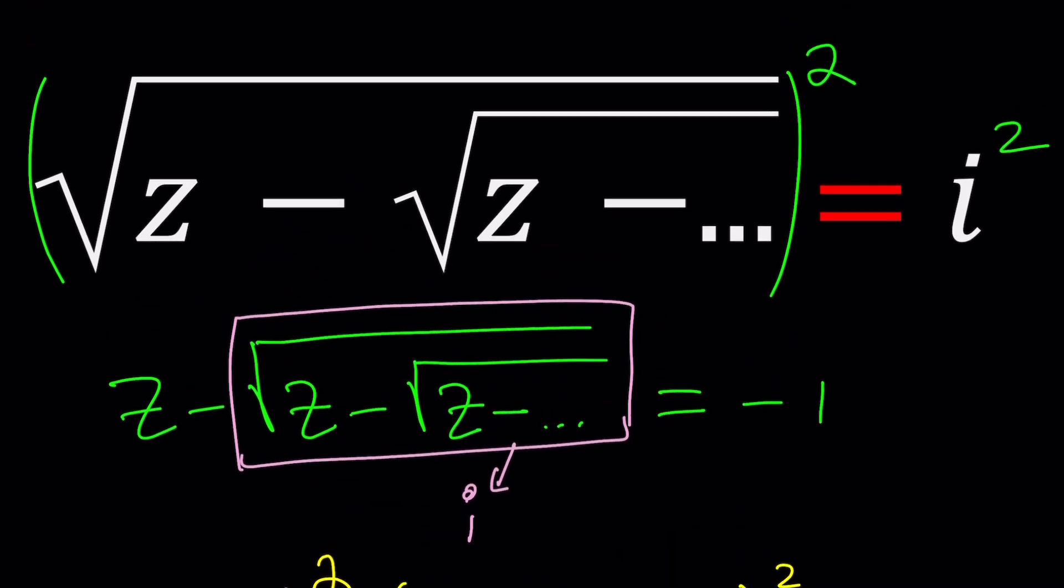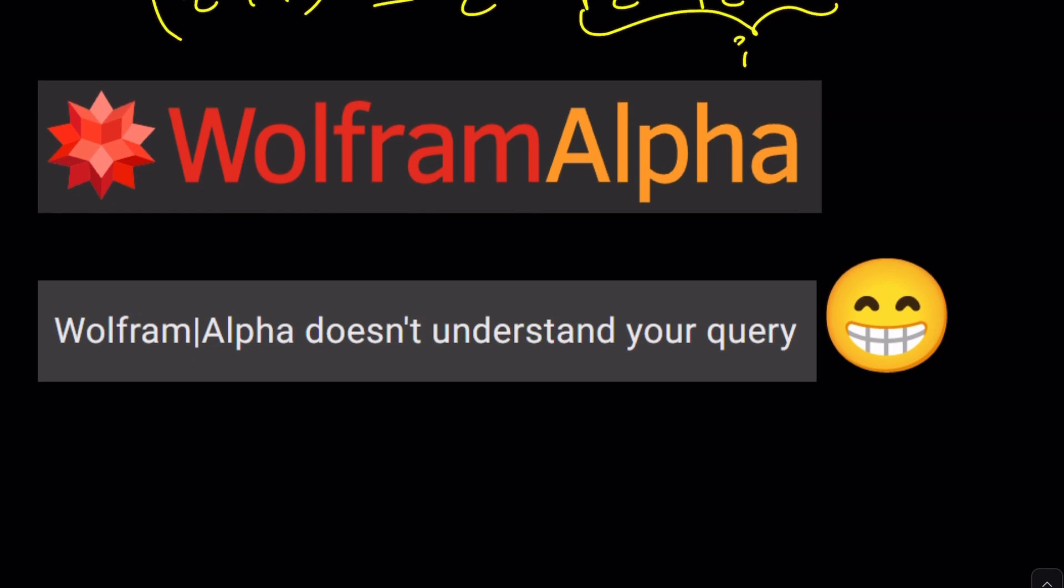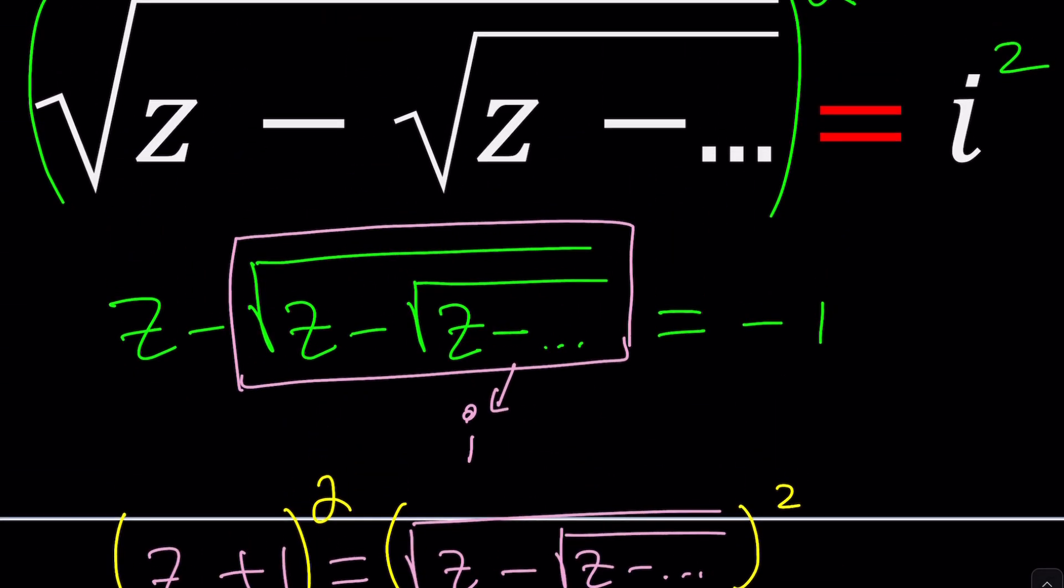let me show you what Wolfram Alpha provides for this problem. Can you guess what the answer is going to look like? Well, Wolfram Alpha does not even understand my query. Is my query bad? I don't think so. I just typed the same equation, the original. If there's a better way to do it, just let us know. You could even share a Wolfram Alpha link. Did you know that? If you calculate something and then you want to share with the audience, go ahead and do so.